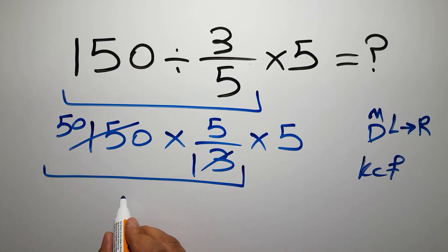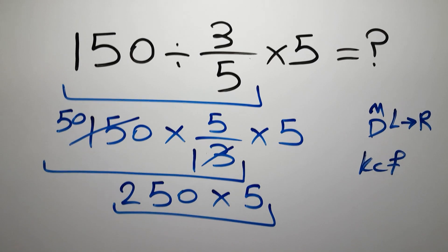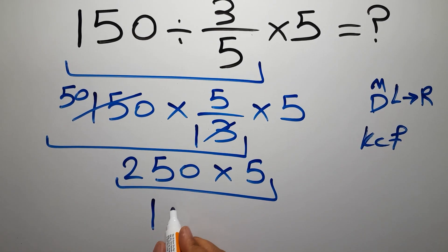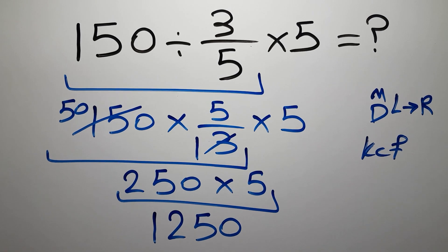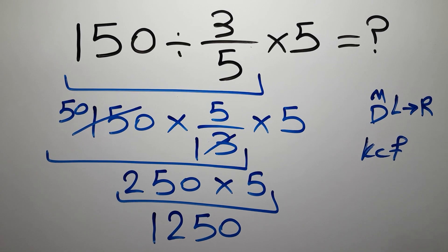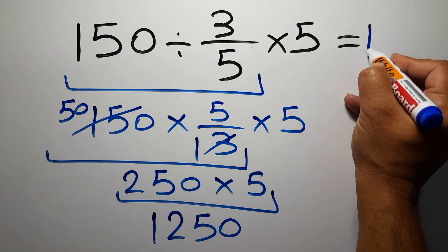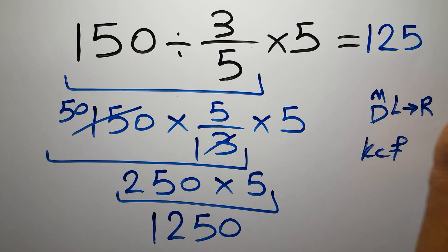50 times 5 gives us 250, and 250 times 5 is 1,250. And this is our final answer to this problem. The correct answer is 1,250.